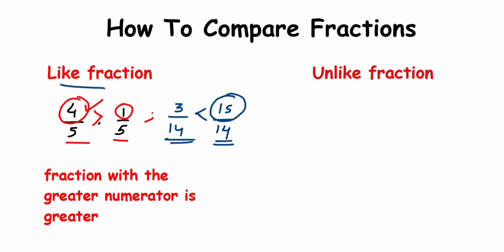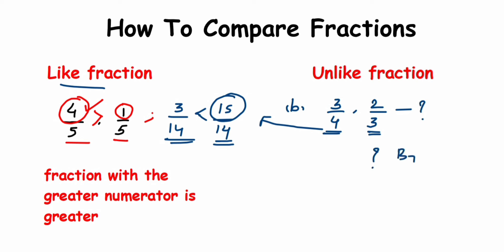In the second case, both the numerators and denominators of the fractions are different. What we do here is make the denominators the same — converting them into like fractions. For example, 3/4 and 2/3 have different numerators and denominators. We take the LCM of the denominators 4 and 3 to make them like fractions.